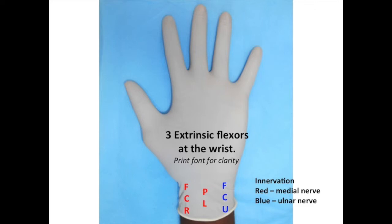Finally, in the center, you have the Palmaris Longus. This tendon may be absent in 30% of the population, and it is often used for tendon transplants. The red marker indicates median nerve innervation; the blue marker indicates ulnar nerve innervation. Pause the video while you make these markings on your glove.